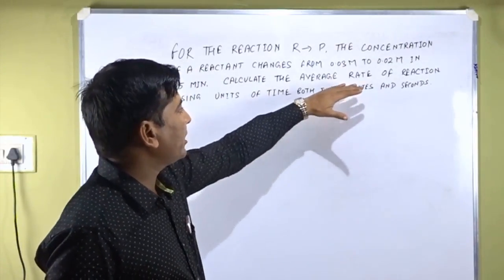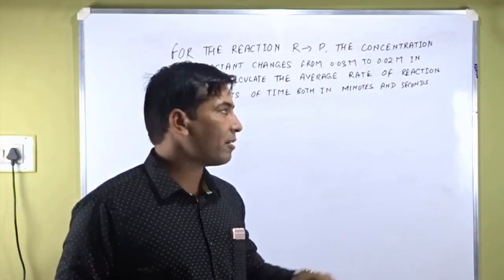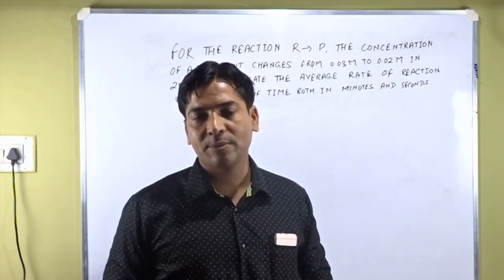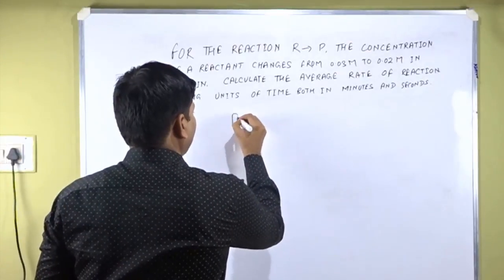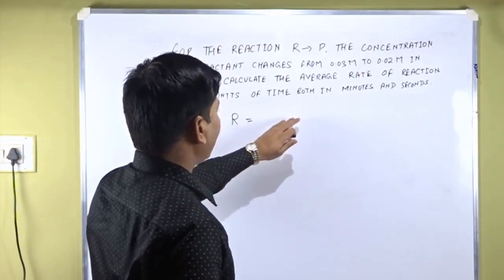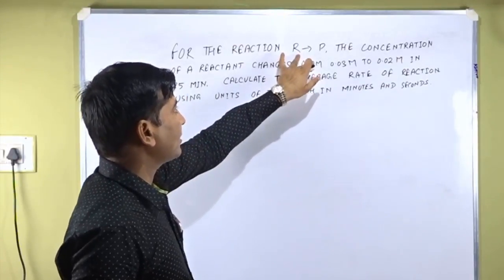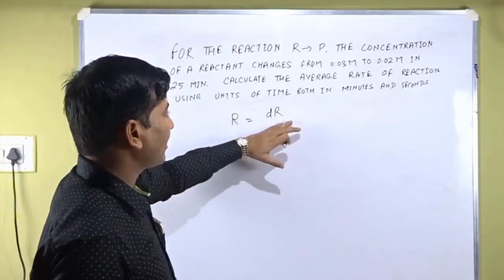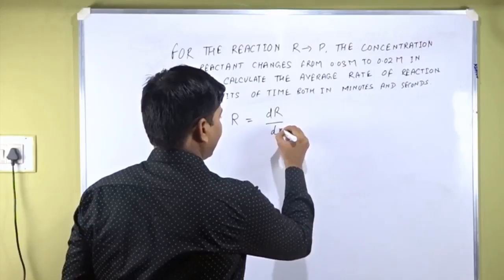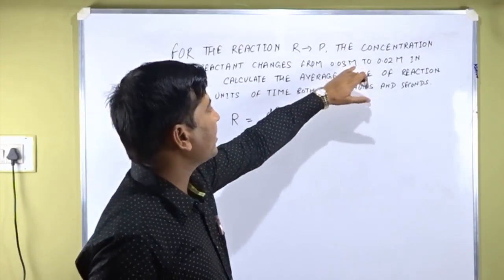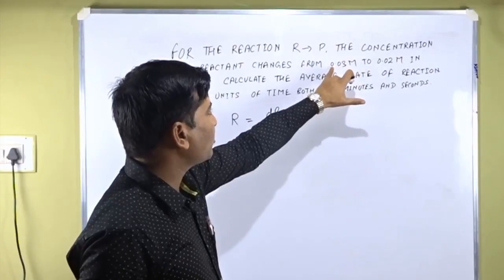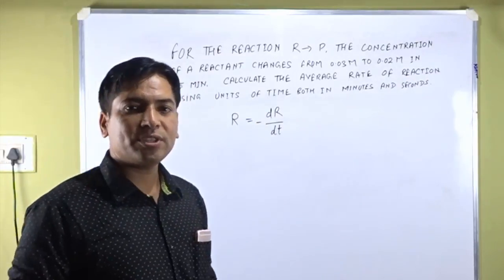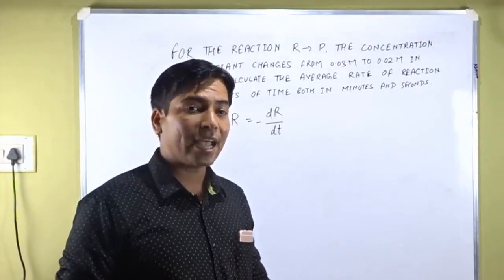To calculate the average rate of reaction, we apply its formula. The average rate of reaction is the change in the concentration of reactant or products per unit time. It is represented by R, and since there is a change in the concentration of reactant R, we write -ΔR/ΔT, where ΔT is change in time. The minus sign shows that there is a decrease in the concentration of the reactant in the chemical reaction.